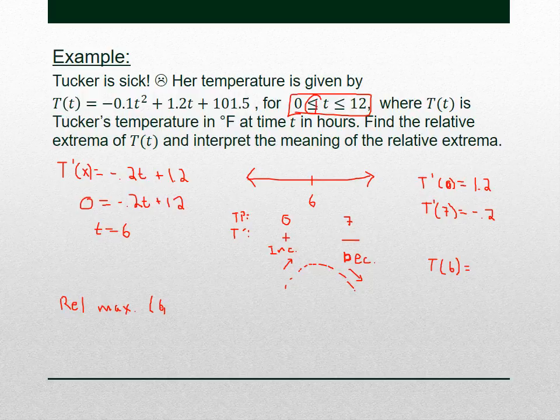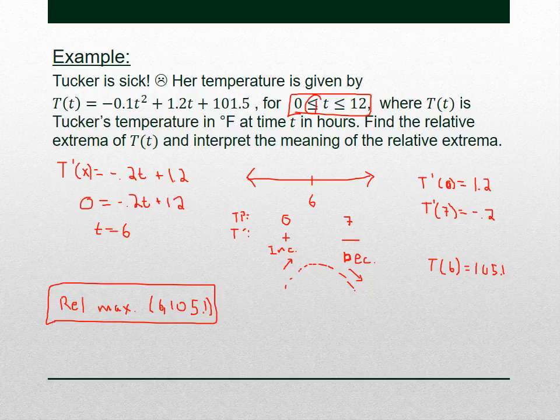The relative maximum occurs at t = 6. Plugging into the original function, the temperature at 6 hours is 105.1. So the relative maximum is the point (6, 105.1). The interpretation: at 6 hours after getting sick, Tucker has her highest temperature of 105.1 degrees — perhaps her fever broke at that point and started going down.